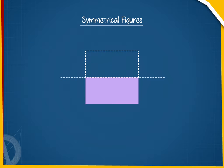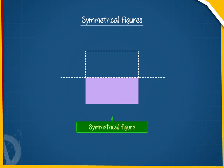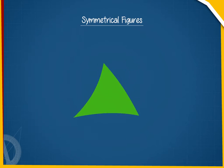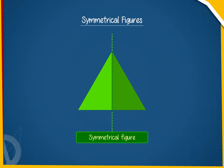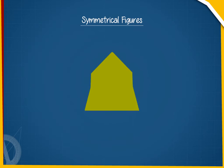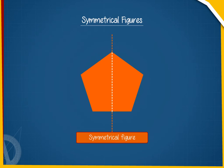Such figures are called symmetrical figures. The first figure is a triangle that can be divided symmetrically. The second figure can also be divided symmetrically.